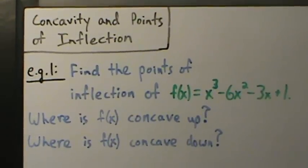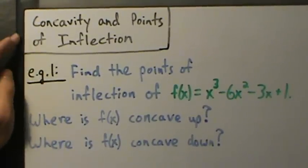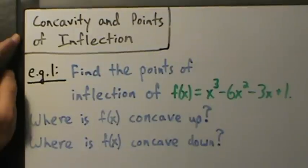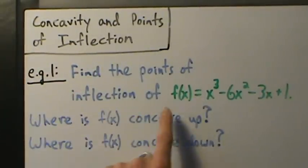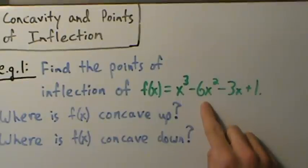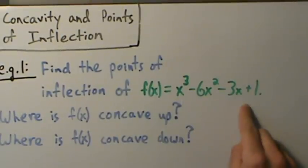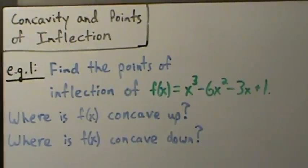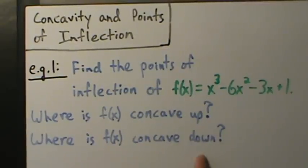Here's example one with concavity and points of inflection. We want to find the point of inflection of f(x) = x³ - 6x² - 3x + 1, and we also want to know where f(x) is concave up and where it is concave down.